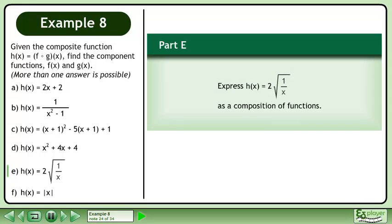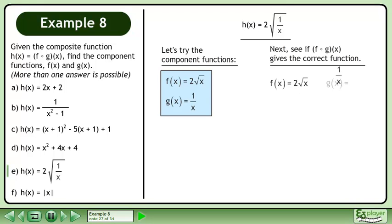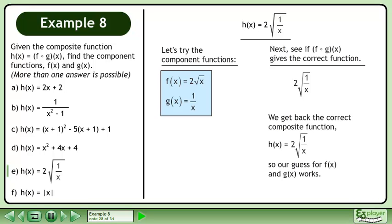In part e, express h equals 2 times the square root of 1 over x as a composition of functions. Let's try the component functions f equals 2 times the square root of x and g equals 1 over x. Next, see if f gives the correct function. Plug g into f. We get back the correct composite function h equals 2 times the square root of 1 over x, so our guess for f and g works.